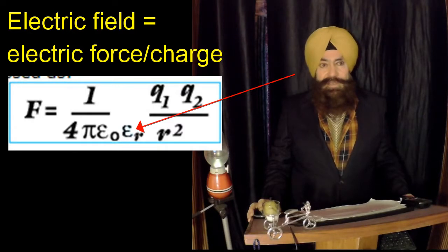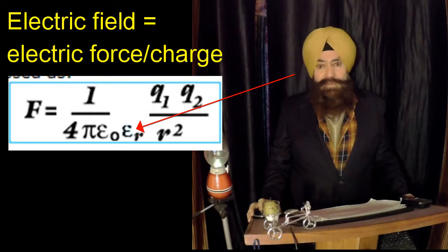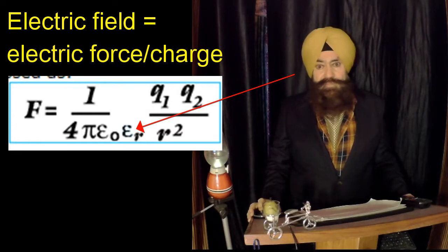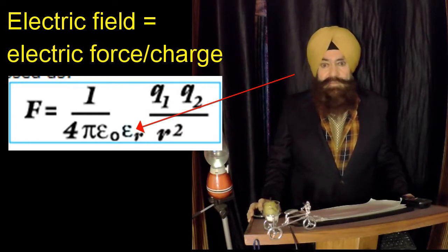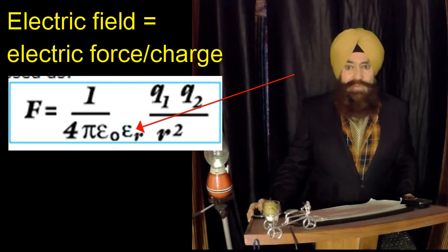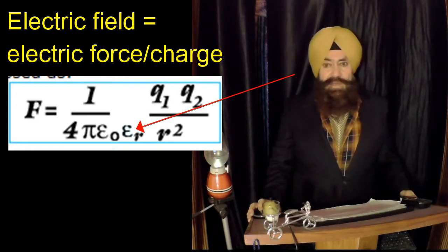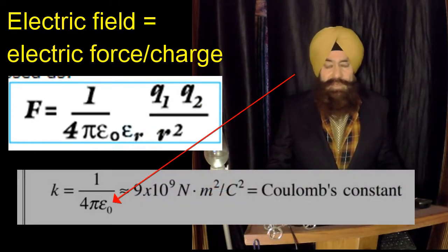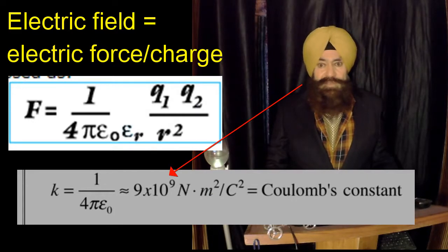The dielectric constant comes in the denominator, rather than the constant itself, the Coulomb's constant itself. Because the dielectric constant is very, very small in case of vacuum or free space, so its reciprocal is very, very large.